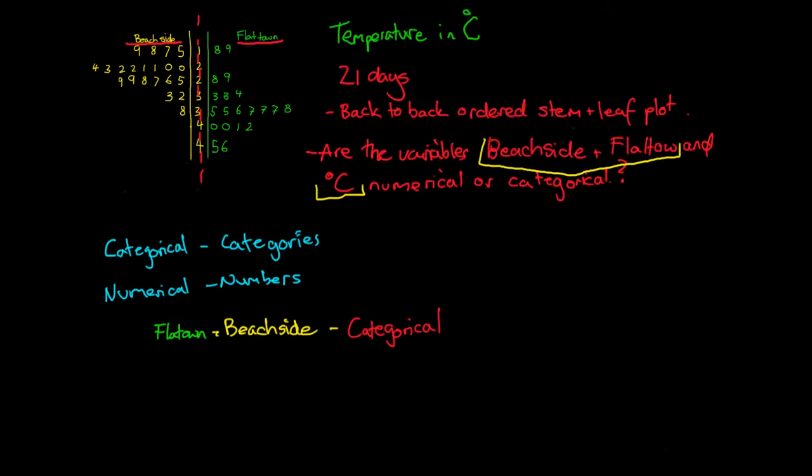Then if we want to look at our degrees Celsius, these are our temperatures. These really make up all of the values inside the table. So here, here, here. All of these values are our temperatures for Beachside, and all of these values are our temperatures for Flat Town.